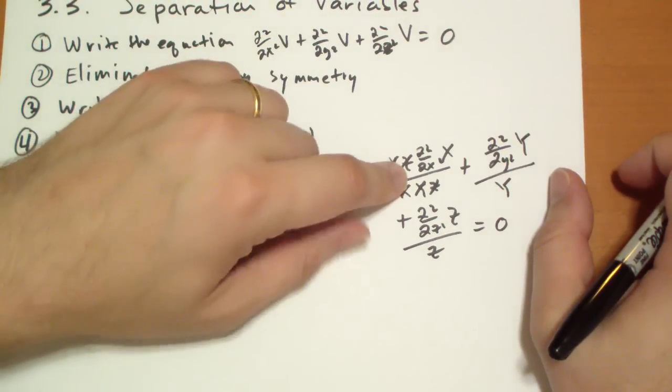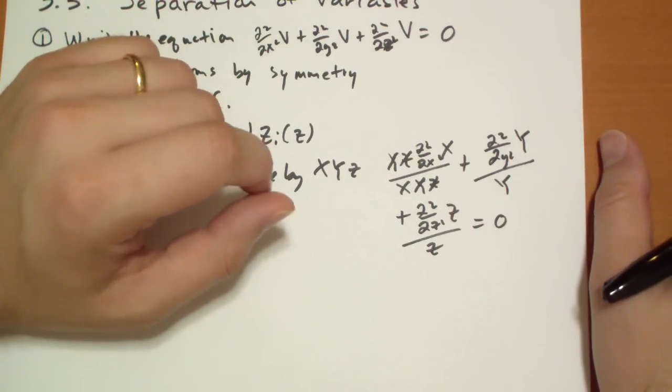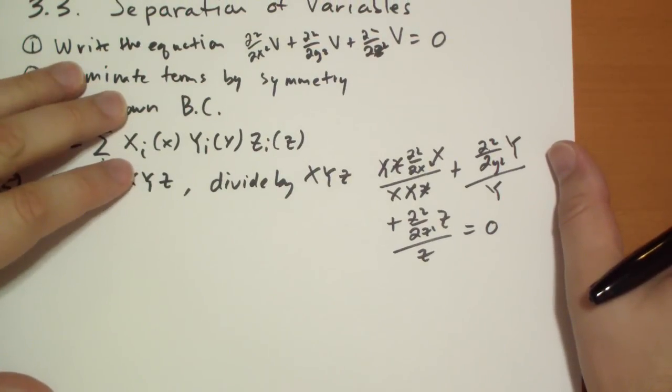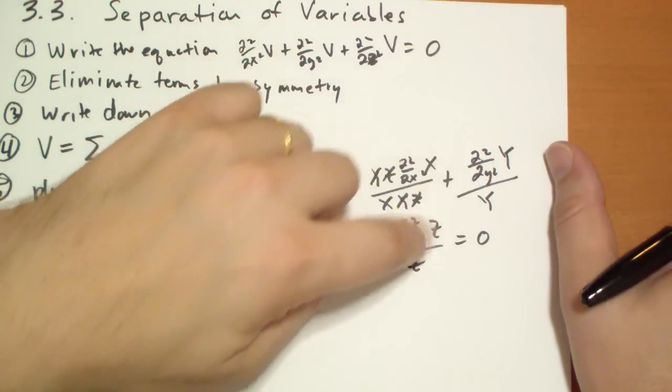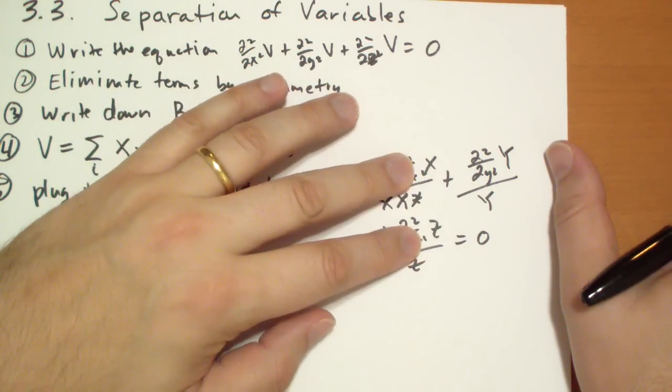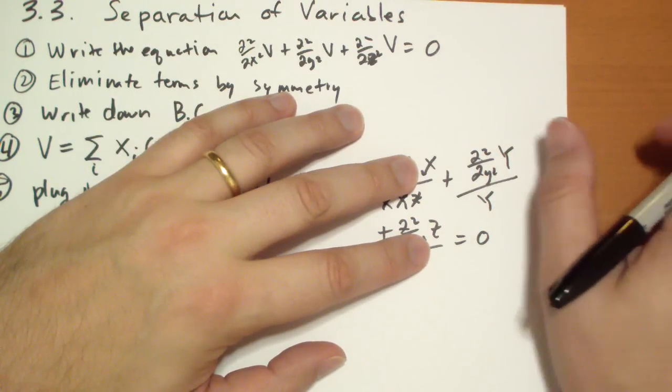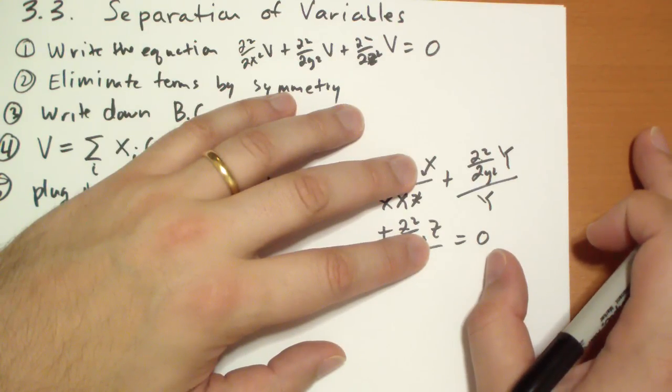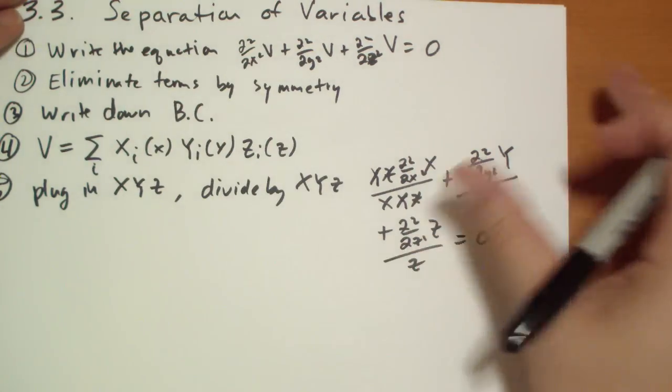you have basically three separate terms, and each of these terms depends only on one variable. This one depends only on x, that one depends only on y, and that one depends only on z. It shouldn't take much effort to understand why these all have to be constant. Just imagine you hold x and z constant and vary y. These two values are not going to change, so this value can't change if we're going to maintain a value of zero. You can do that for any of the other terms, so all of these must be some constant that add up to zero.